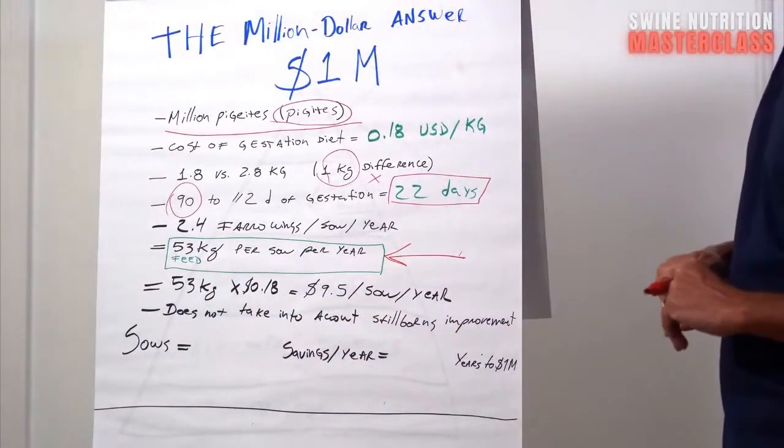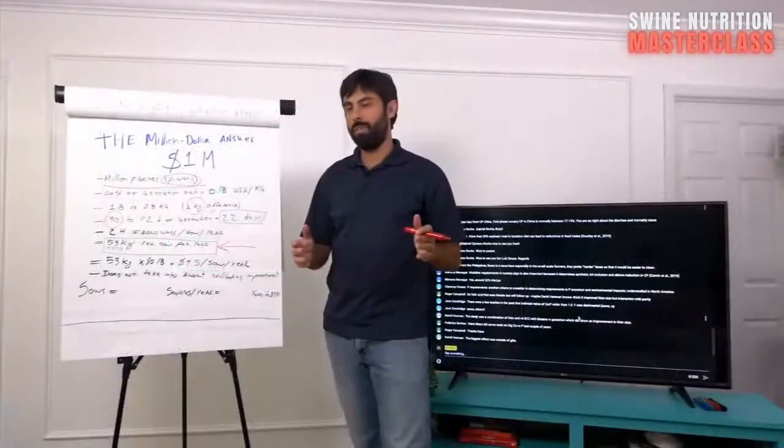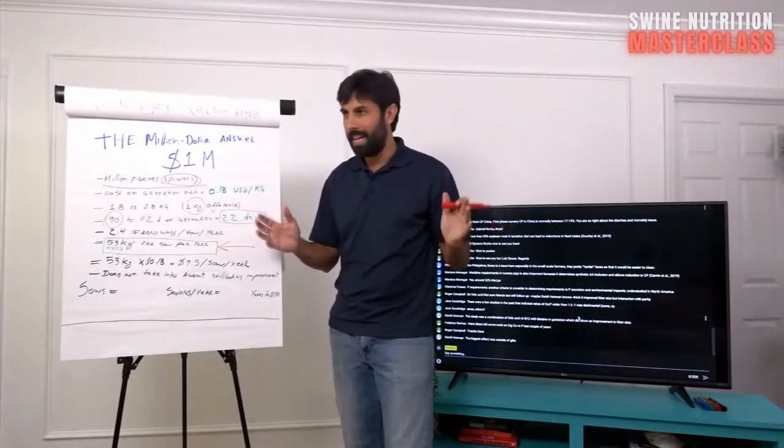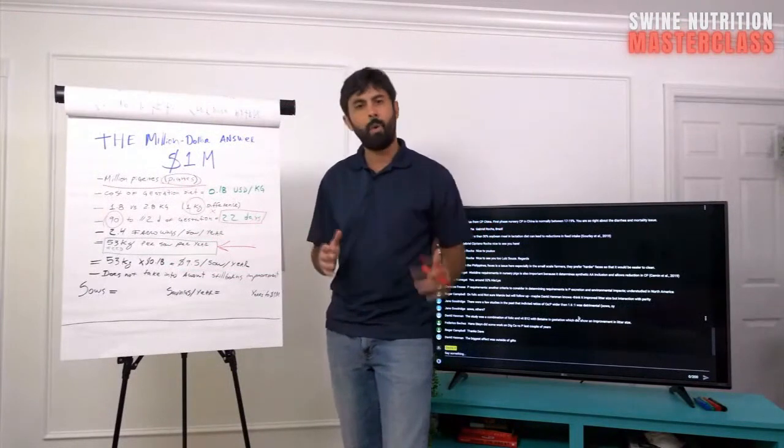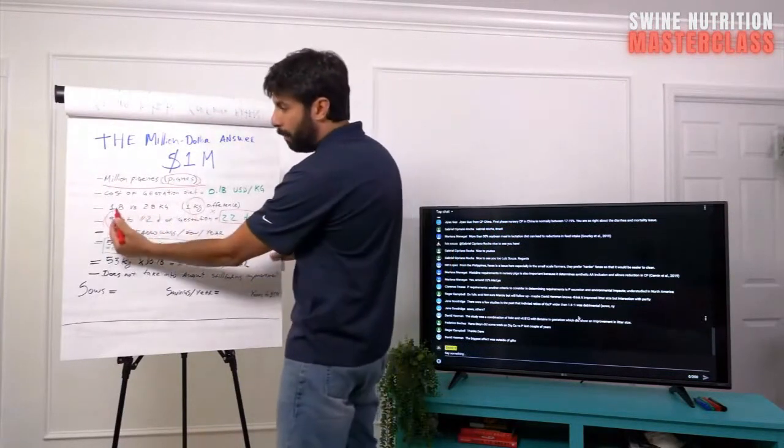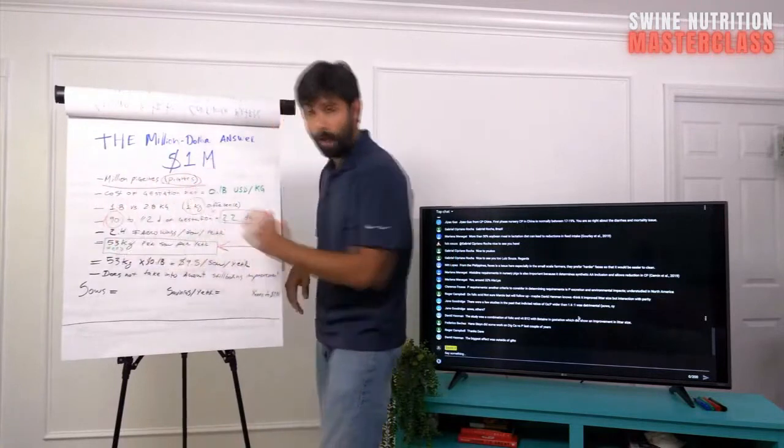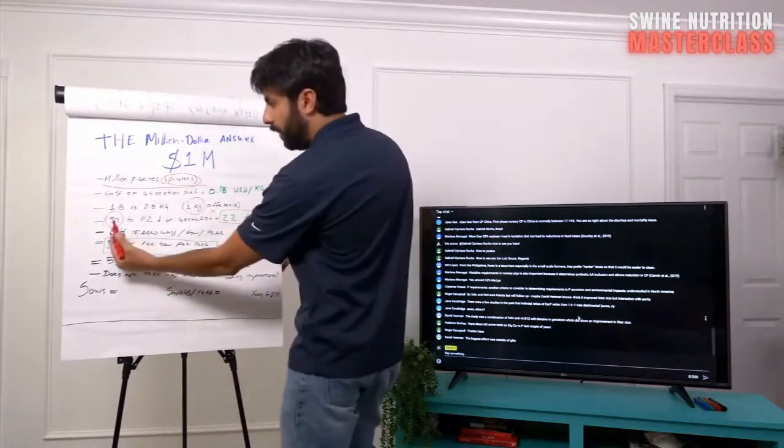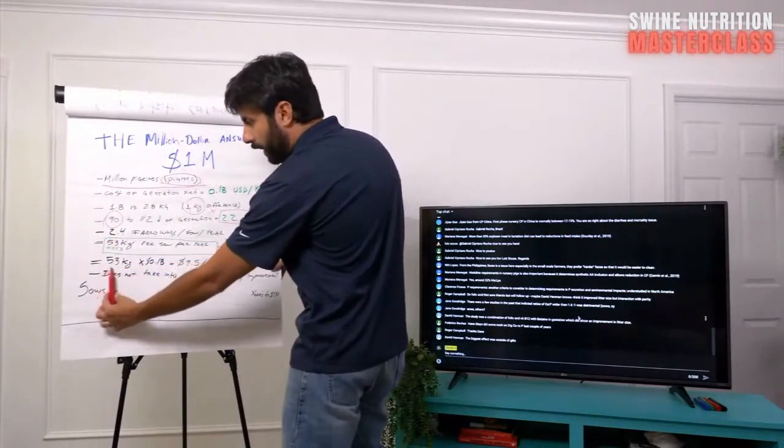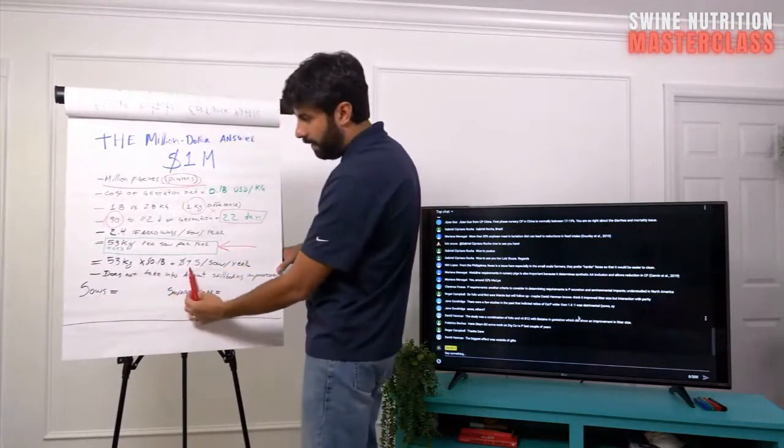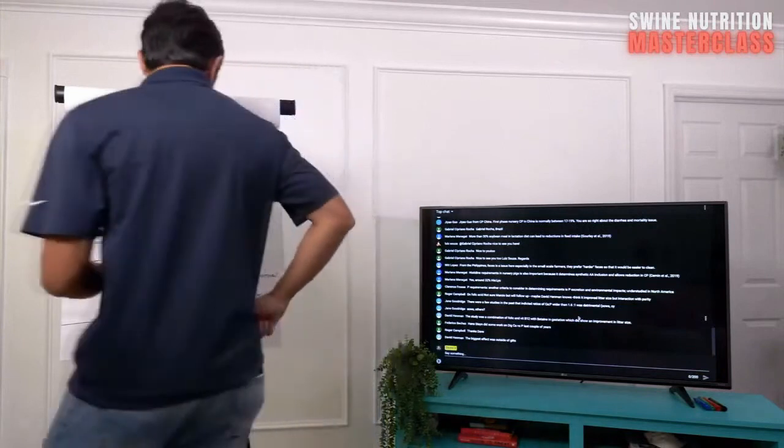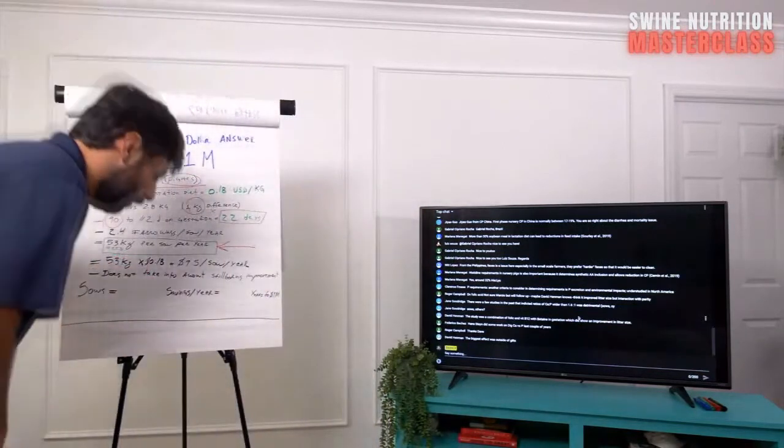And again, folks from all over the globe, just because I'm saying it's a corn soy diet, it doesn't mean, because if you have a lower energy than corn soy, you just do the math. Oh, it's 10% less? All right, 10%. So 1.8 plus 10% is 2, right? So it's easy to convert, regardless of ingredients that you're doing. All right. So 53 kg times 18 cents is $9.5 per sow per year. So that's roughly 10, right? Roughly $10 per sow per year if you do that. Again, if you're doing it to the whole herd or not, but that's going to depend.